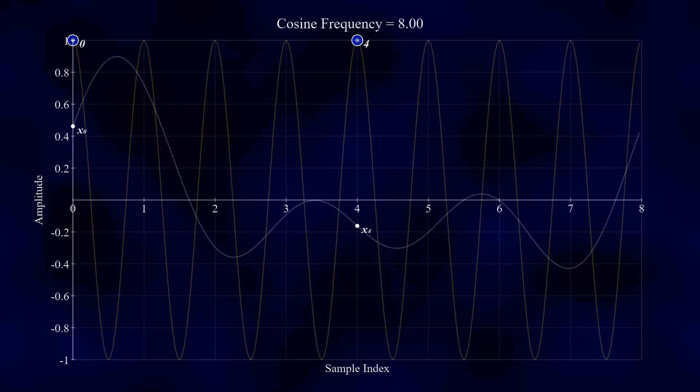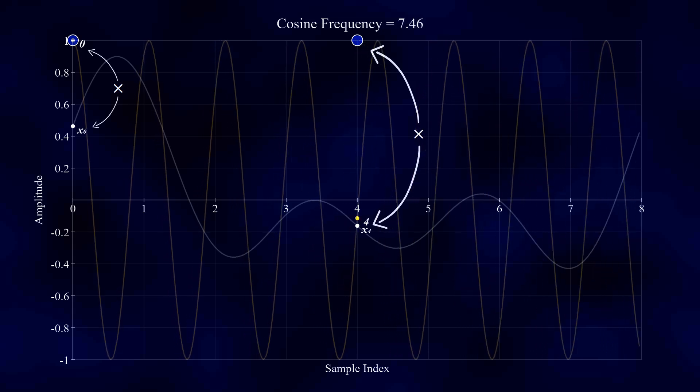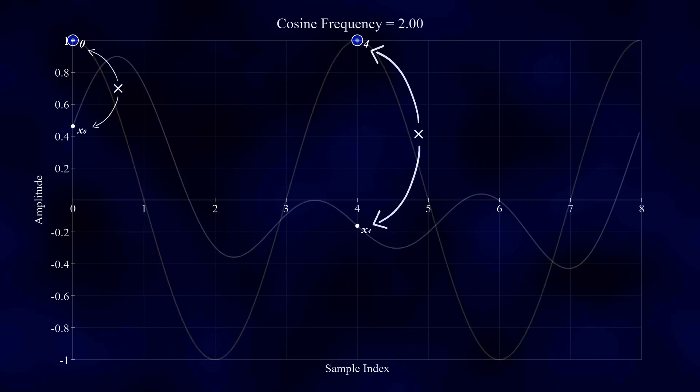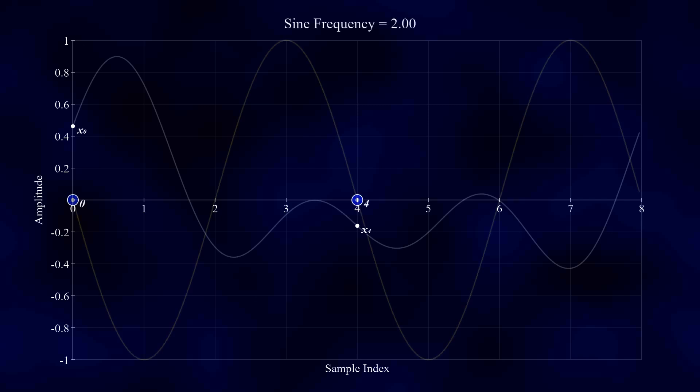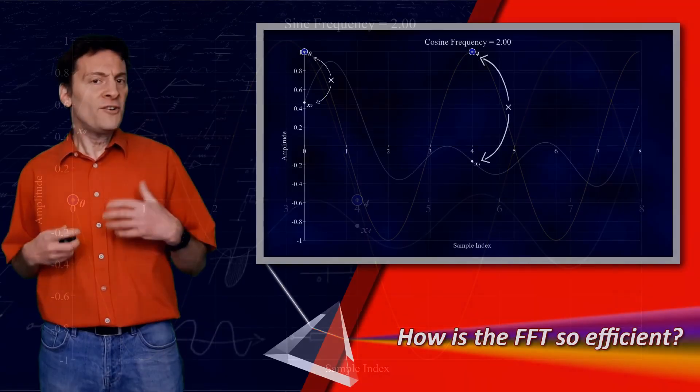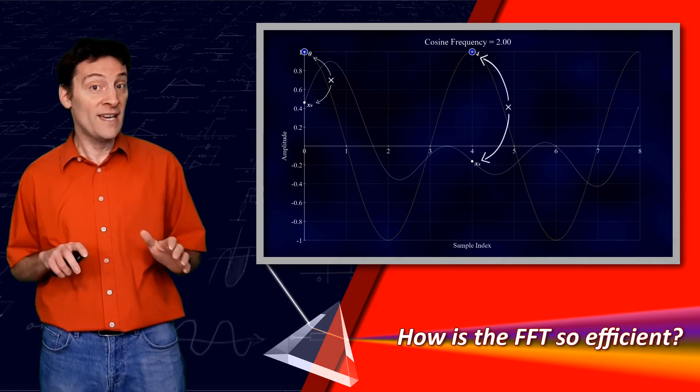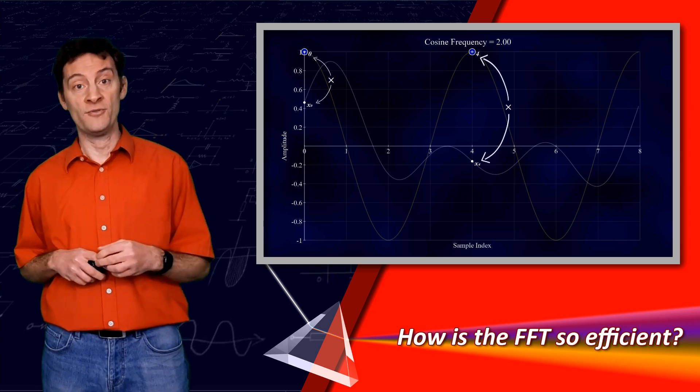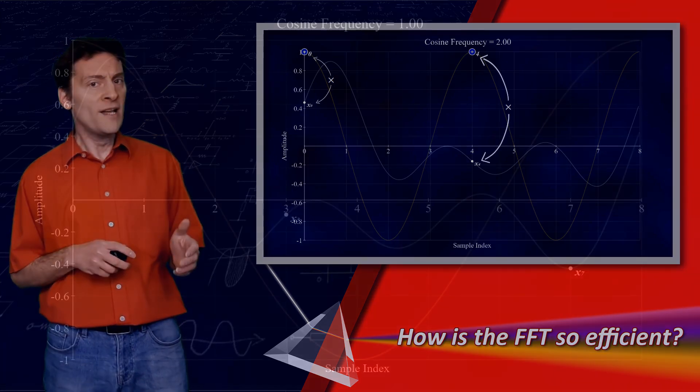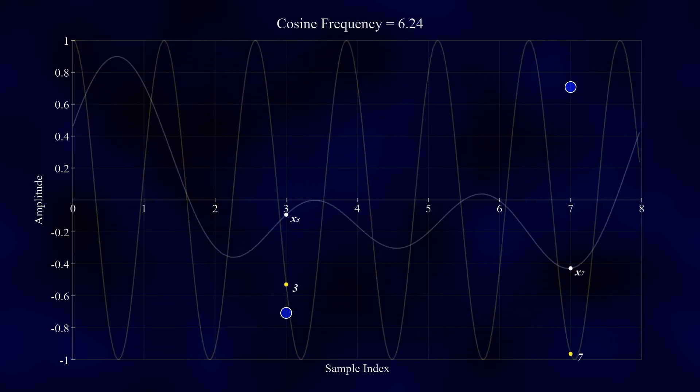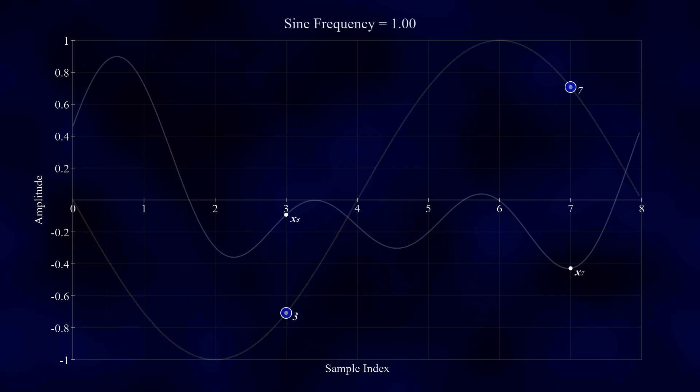If this is true, then when we multiply x0 and x4 by their corresponding points on the cosine wave, it doesn't matter which of the four frequencies we test, the answer will always be the same. The same thing happens if we replace the cosine wave with a sine wave. This phenomenon of repeating amplitudes is true for other sample combinations as well, the only difference being the number of frequencies for which the same amplitudes repeat. For example, samples 3 and 7 repeat only twice out of the eight test frequencies. The same is true for the sine wave as well.